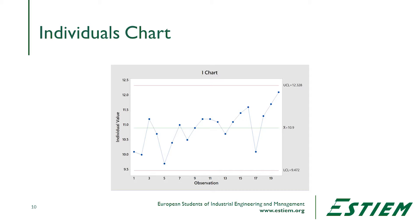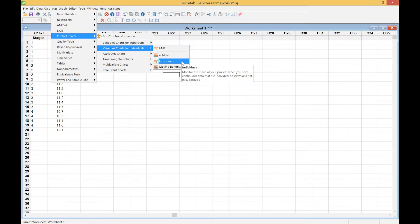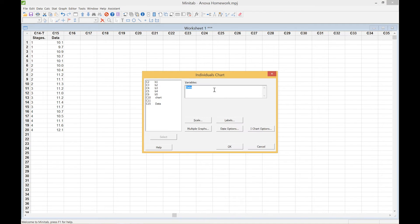There are certain things we can do to each of these charts to dress them up and provide more information. For instance, we can look at the individuals chart and break the data by rational subgroup that relates to significant changes occurring in the process over the time period of interest. The way we do this is we go into the options menu for the individuals chart and select stages.